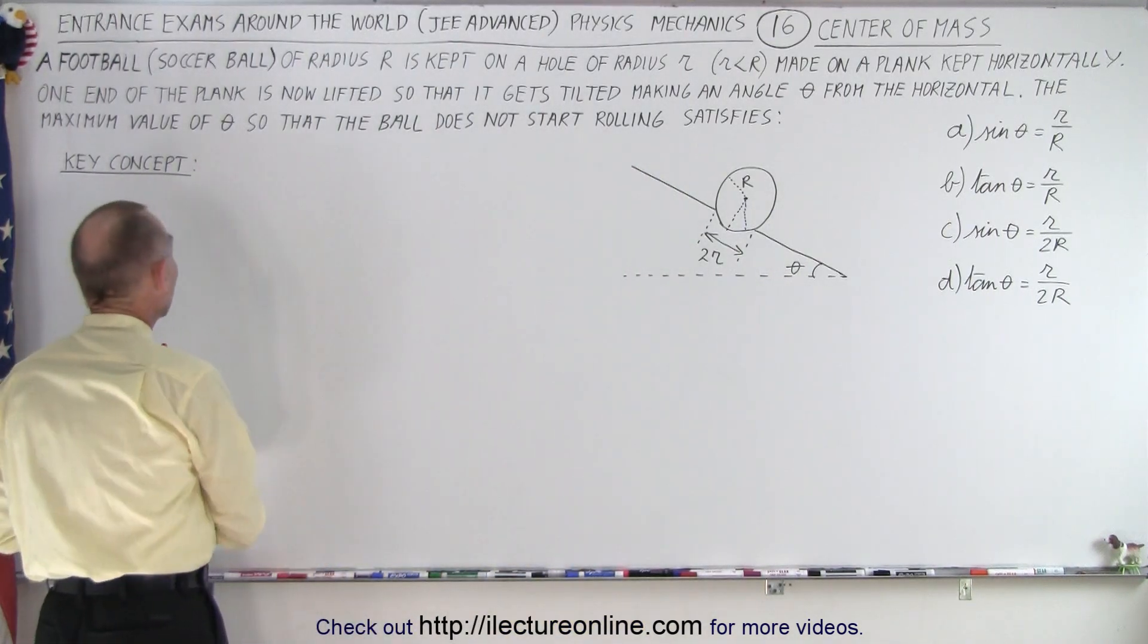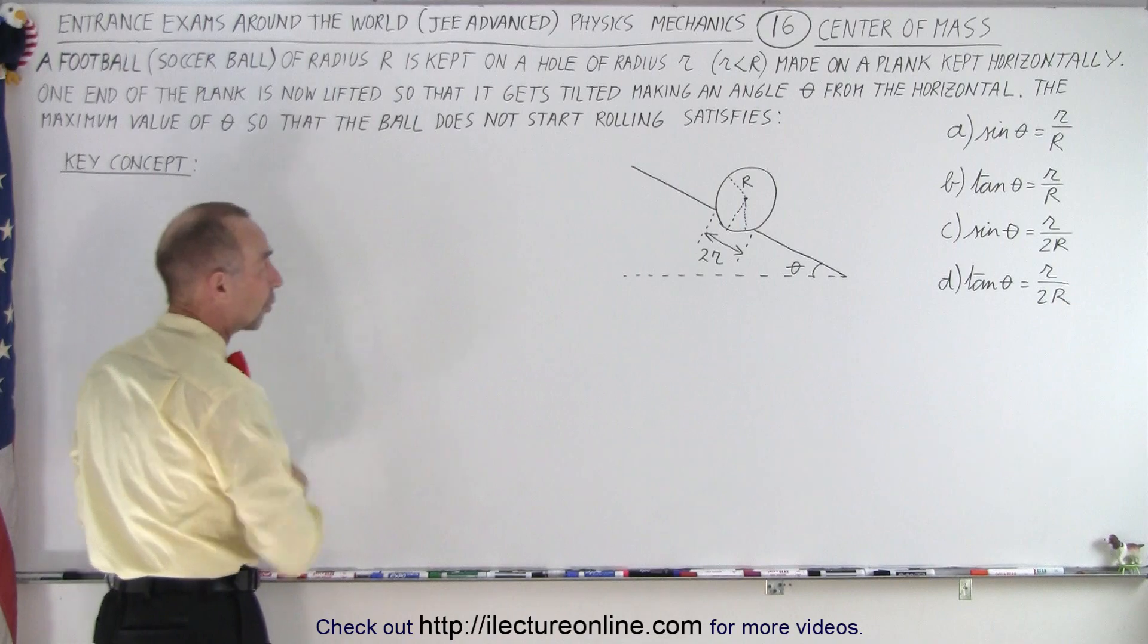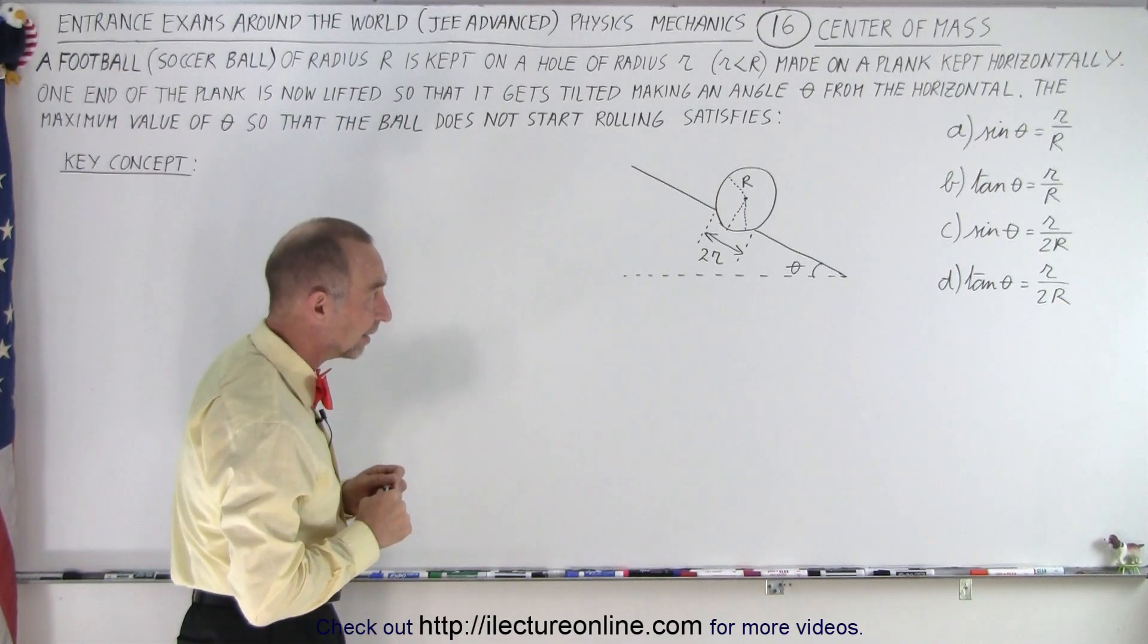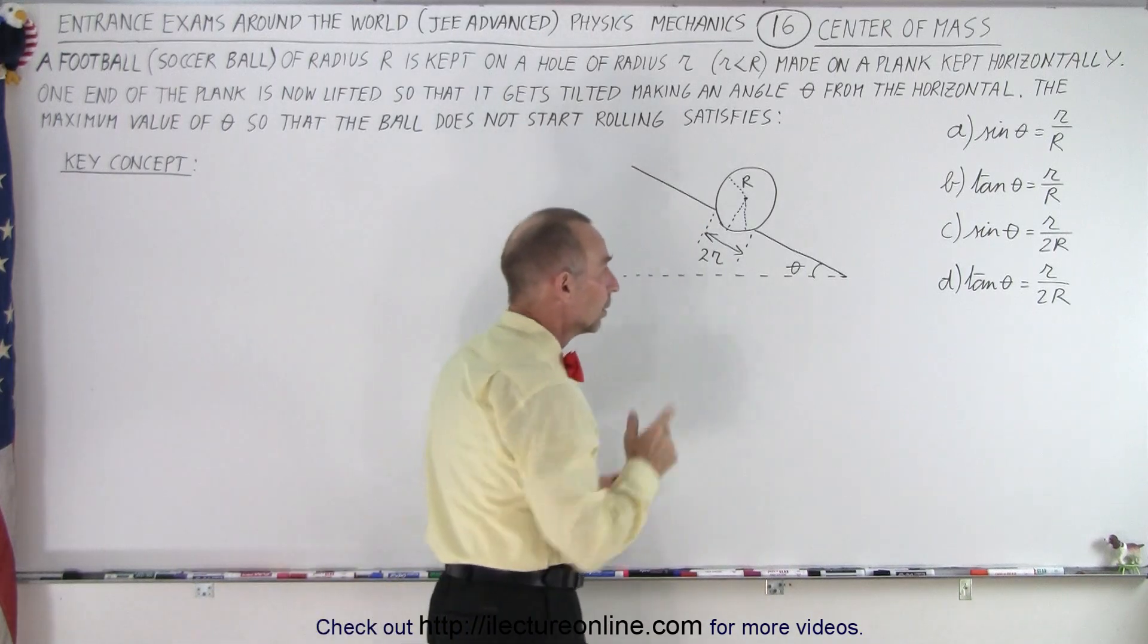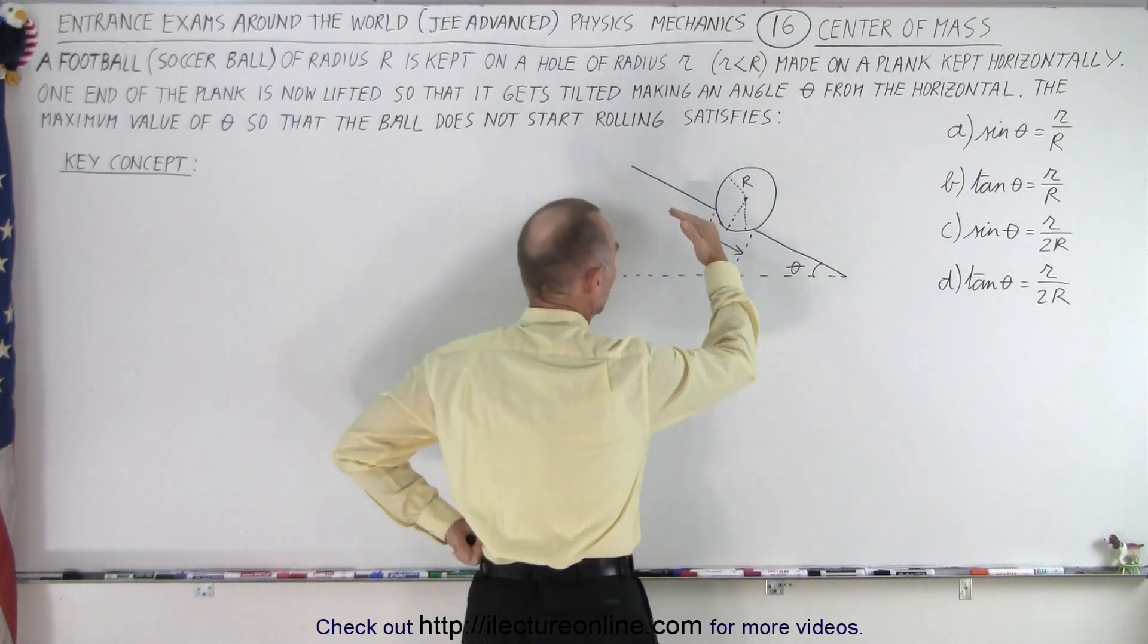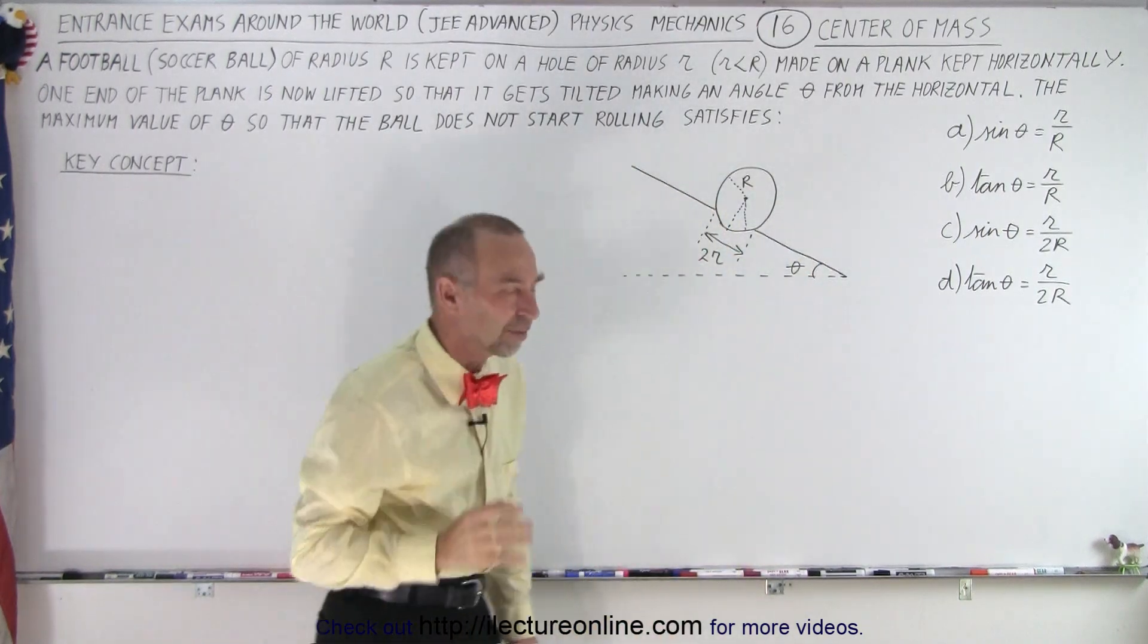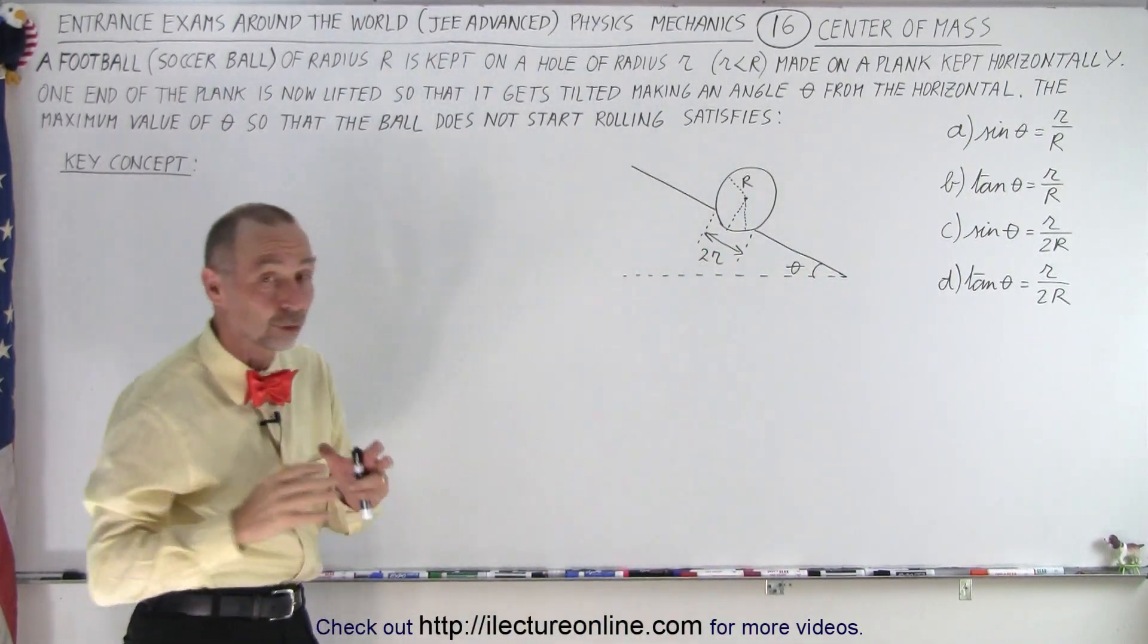And then what is the maximum value of theta so that the ball does not start rolling? And of course, one of these answers satisfies that question. So you can imagine, as we make it steeper and steeper and steeper, eventually the ball will roll out. But what is the key concept here? What should we realize or what should we know?